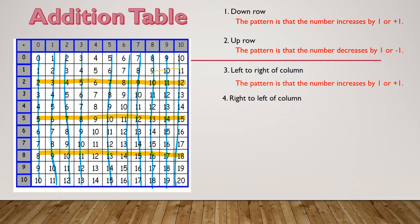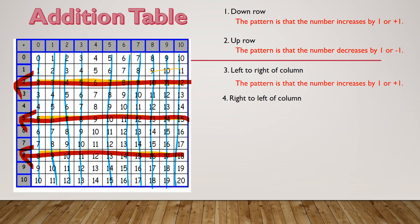Right to left of the column. So let me draw an arrow. We're going this way now. What is the pattern here? And when we go from, let's take this one here: 18, 17, 16, 15, 14, 13, 12, 11, 10, 9, 8. We're decreasing by one.